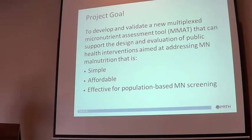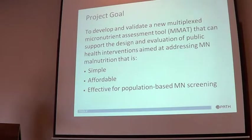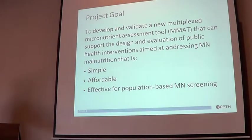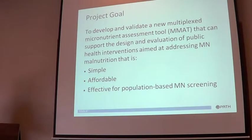What happens is you'll go to a population, do a random sampling, analyse those samples, and look at the vitamin A levels and the iron levels. You can then see what the micronutrients are presenting, what the levels are within the general population. If they're low, you can go into those areas and do fortification programmes to raise the levels of micronutrients within that population.